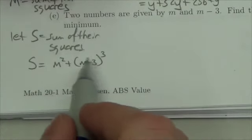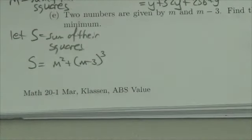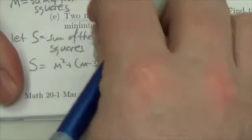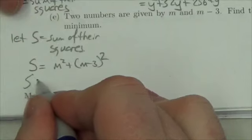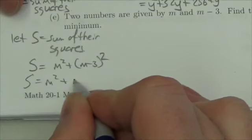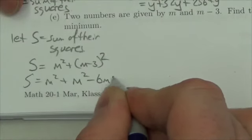Now the first thing I gotta do is expand this out. The nice thing about it is it's all in terms of m right here. Whoa, I don't know why I wrote cube there, that was bizarre, it should be squared. So now s is equal to m squared plus m squared minus 6m plus 9.